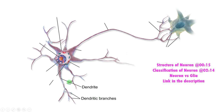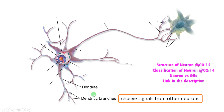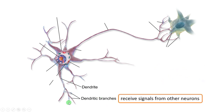Let's begin with the dendrite. These are fine dendritic branches meant for receiving signals from another neuron. Dendrites are involved in reception of signals from another neuron. They are short, fine branches.